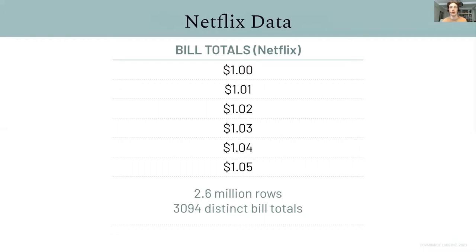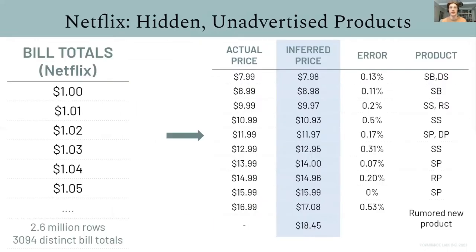The answer turns out to be yes. So, we get the first column of bill totals on the left, and that's it. And then our method produces the blue highlighted column, which are the inferred product prices or menu prices. Then, by hand, for these slides, we match the inferred prices to actual prices in Netflix's catalog. So, now we're able to compute error in our method.